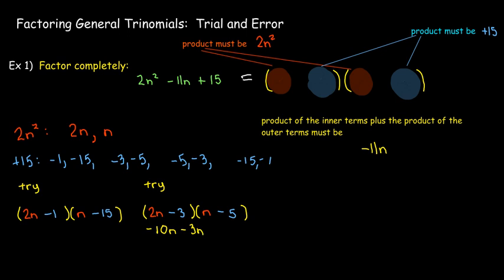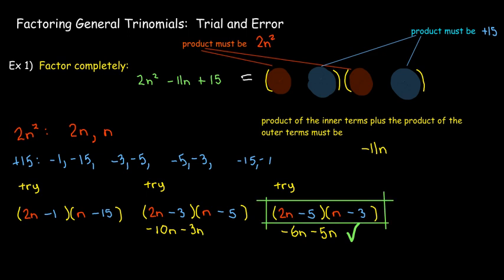Let's try negative 5 and negative 3. The outer gives me negative 6, the inner gives me negative 5. Together, that makes negative 11, which is what I want. And so that is my factorization: (2n − 5)(n − 3).